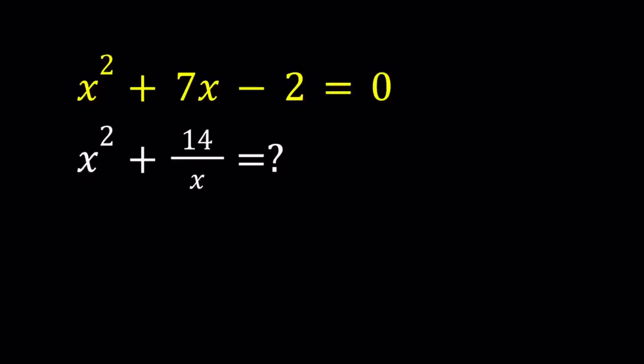Hello everyone. In this video, we're going to be simplifying an expression using a quadratic equation. We have x squared plus 7x minus 2 equals 0, and we're supposed to evaluate x squared plus 14 over x. We're going to be finding a numerical value for this, and I'll be presenting two methods.